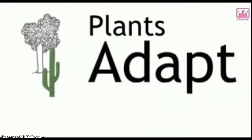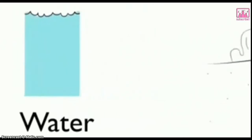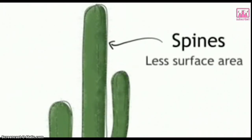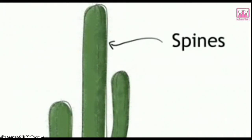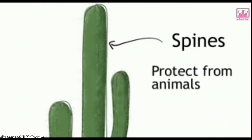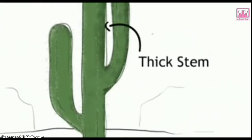Plants have many adaptations to help them survive in their environment, where they may be competing for light, water, space, or nutrients from the soil. The cactus is well adapted to surviving in very dry environments. Cacti minimize their surface area by replacing leaves with spines so that they don't lose too much water through transpiration — the less surface area exposed to outside air, the less water can escape. The spines also protect cacti from animals that might eat them. Cacti also have thick stems for storing water and a waxy coating to stop water from escaping.